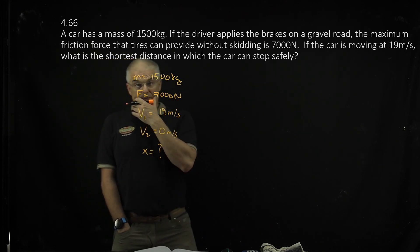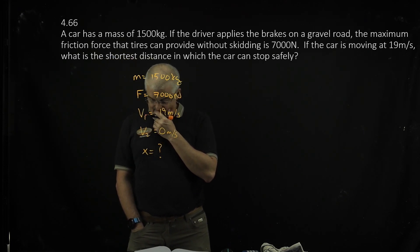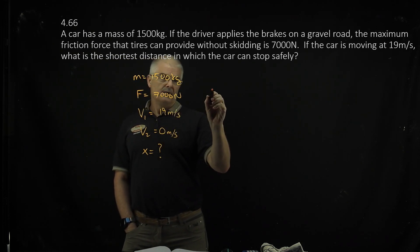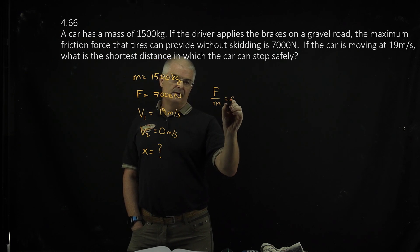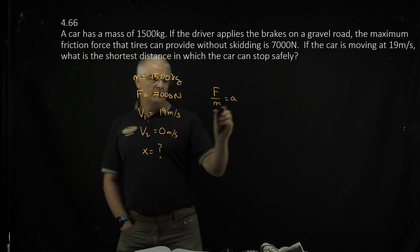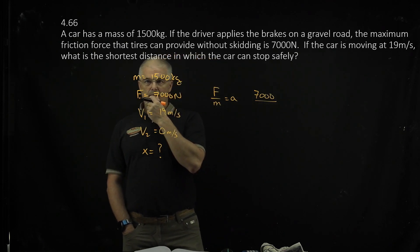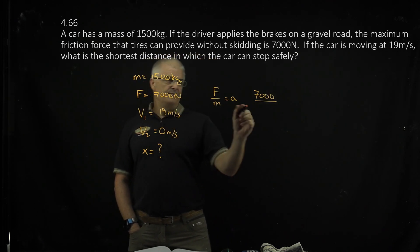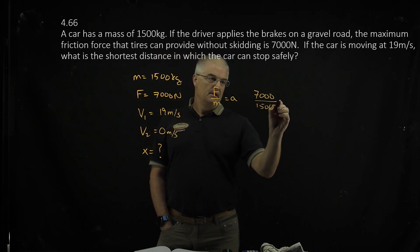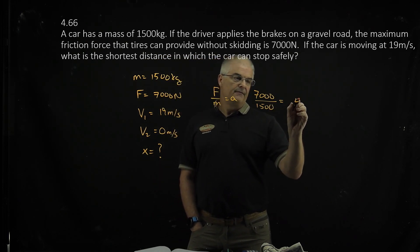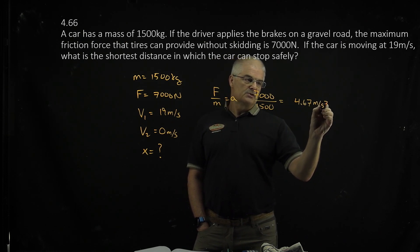So what can we do here? The first thing I did is I want to solve for the acceleration. Since you recall, F over M equals A, Newton's second law. I can plug in and say 7,000 divided by M, 1,500. And I get an acceleration of 4.67 meters per second squared.